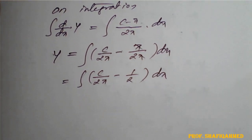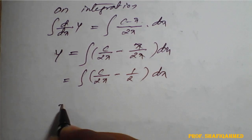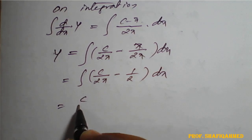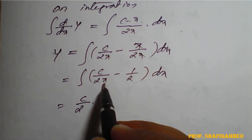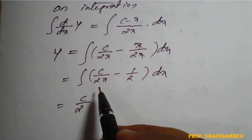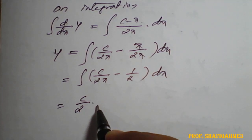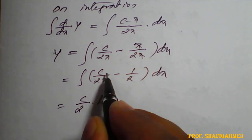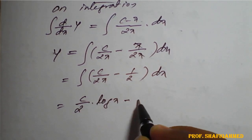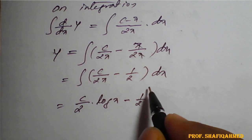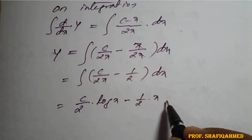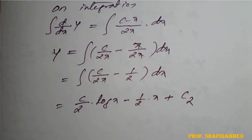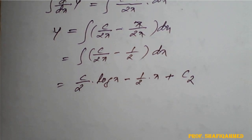Now we will integrate after simplification. c by 2 is a constant in the first term. We have two terms to integrate with respect to x. c upon 2 is a constant, integration of 1 upon x is log of x. Minus 1 by 2 is a constant, integration with respect to x — we need to multiply x. Plus one more integrating constant c2.